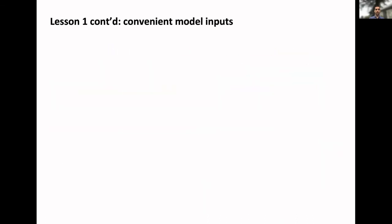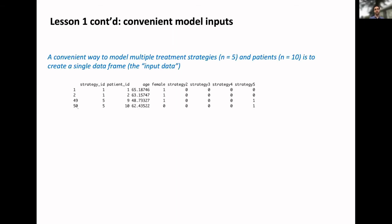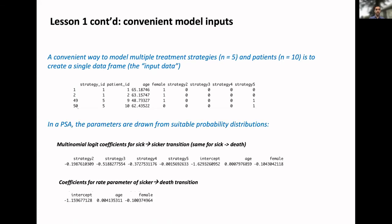When planning ahead, you also think about what inputs need to feed into that pipeline. Can we put those in a convenient framework? Remember we have five treatment strategies, 10 patients. How might we store that data? One way is creating a single data frame, which is every combination of patient or strategy, which can be helpful for vectorizing things. It also will store any covariate information that we might want.